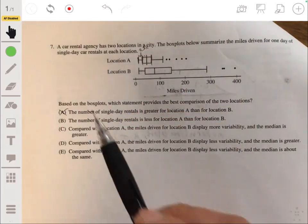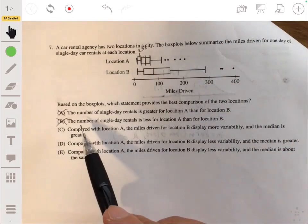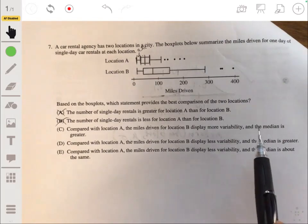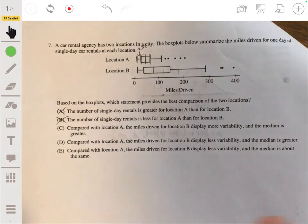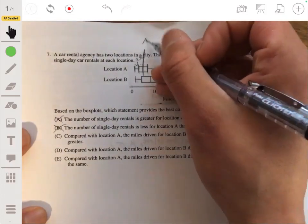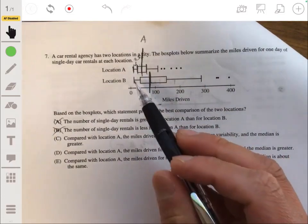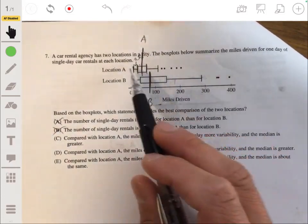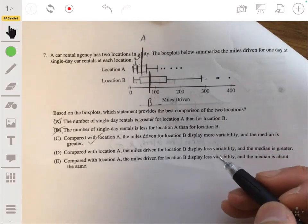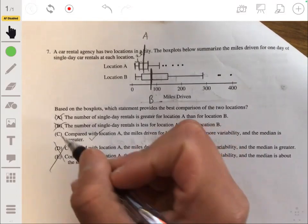So A wouldn't work. The number of single day rentals is less for location A than for location B. Same thing with B. Couldn't tell anything from there. C, compared with location A, the miles driven for location B display more variability and the median is greater. Remember, more variability essentially means more spread, more variation, and the median in a box plot. This would be the median for A and this would be the median for B. So the median for B is in fact greater than it is for A and there is a lot more variability in B's distribution than for A's. So looks like C will work. It's not D or E because it says location B display less variability in both of these. So it's definitely C.